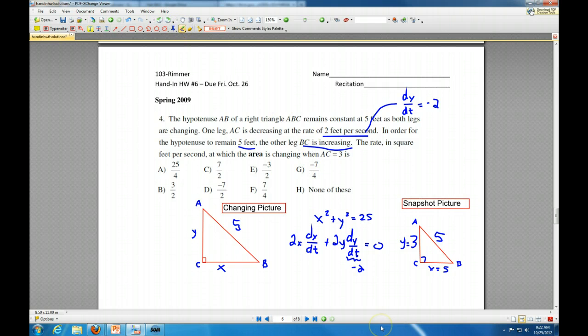Okay. We know dY/dt. We now know X and Y. X is 5 and Y is 3. We can go out and find out what dX/dt is. So 10 dX/dt minus 12 is equal to 0. So dX/dt is 12 over 10, which reduces to 6 fifths.